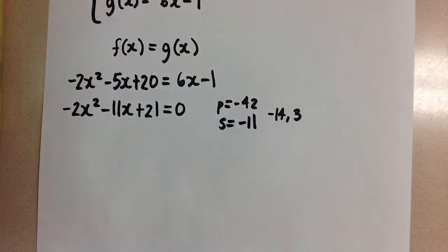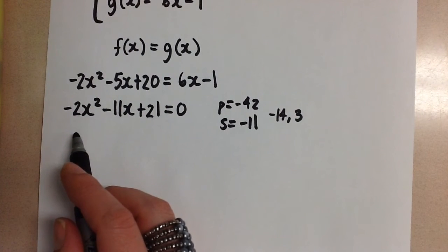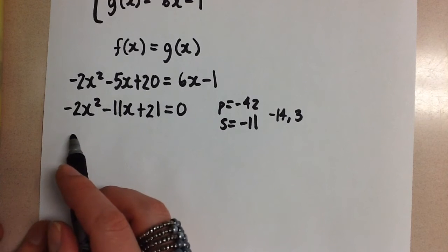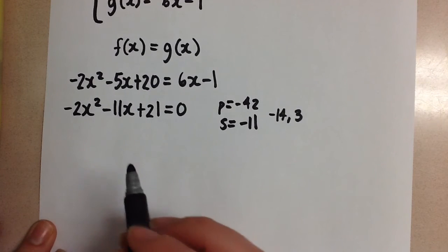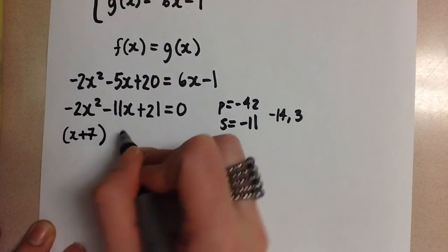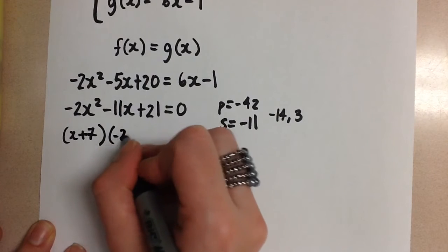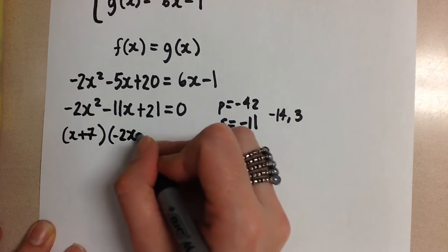So since we have an a value that's not equal to 1, we're going to use decomposition to factor this. And when you use decomposition to do that, we're going to end up with the factors of x plus 7 and negative 2x plus 3.